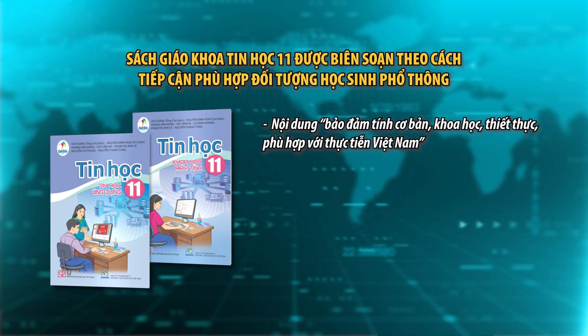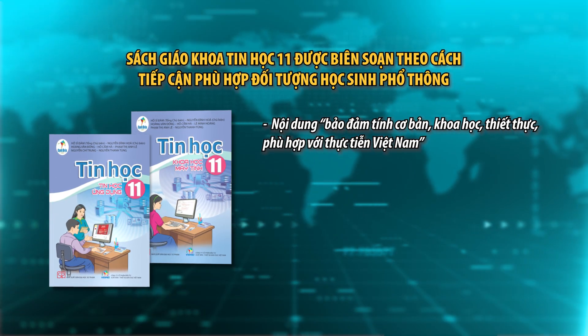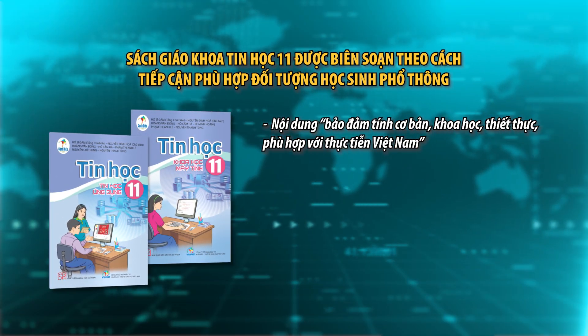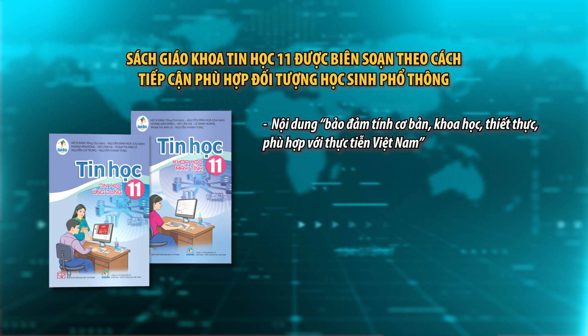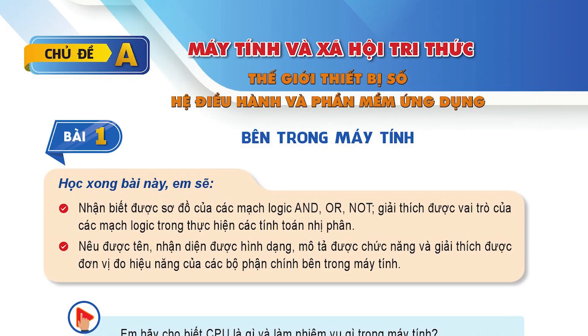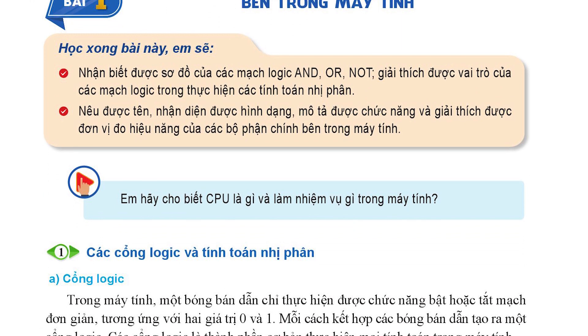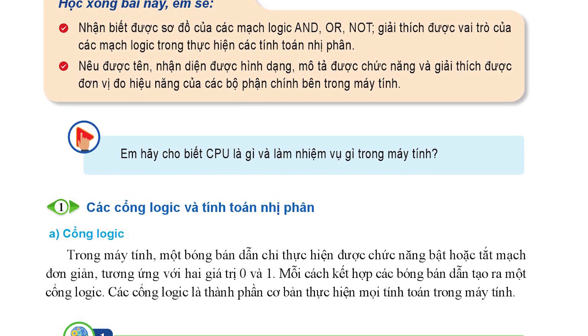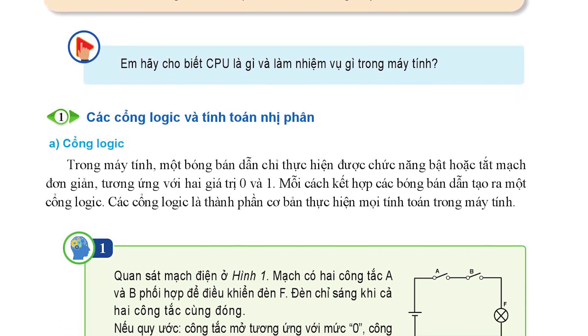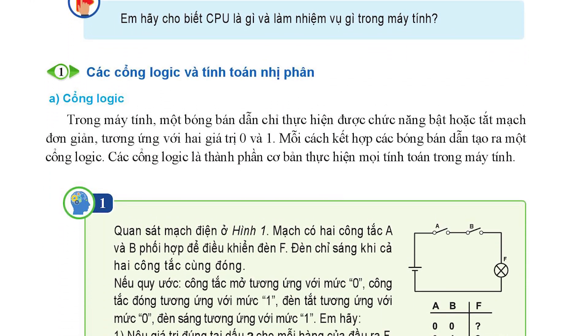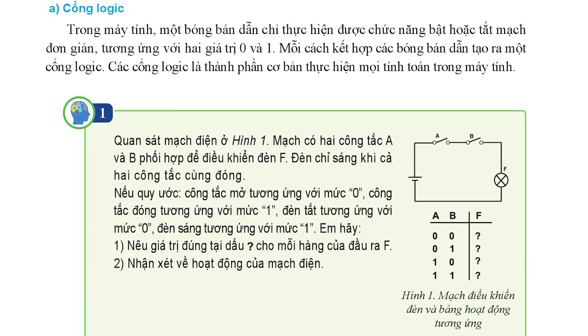Sách giáo khoa tin học 11 được biên soạn theo cách tiếp cận phù hợp với đối tượng học sinh phổ thông. Nội dung bảo đảm tính cơ bản, khoa học, thiết thực, phù hợp với thực tiễn Việt Nam, đồng thời được trình bày dễ hiểu, tránh lý thuyết hàn lâm, theo phương pháp sư phạm, dùng ví dụ trực quan, cụ thể để minh họa các khái niệm khái quát, trừu tượng.